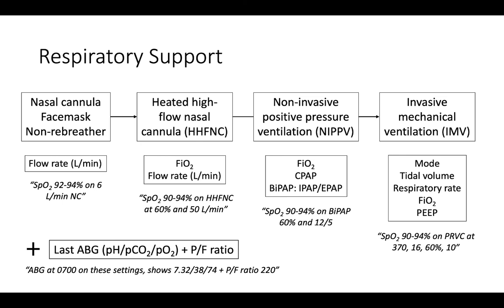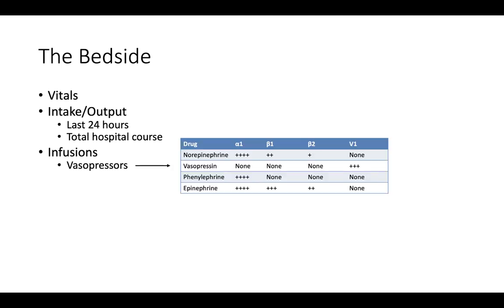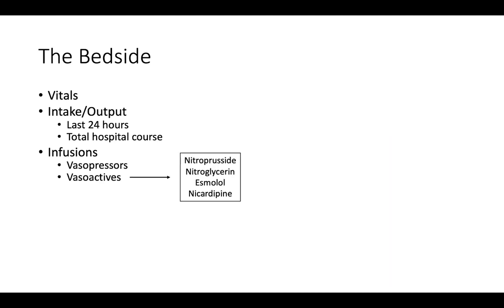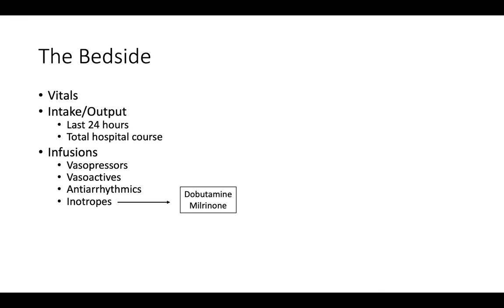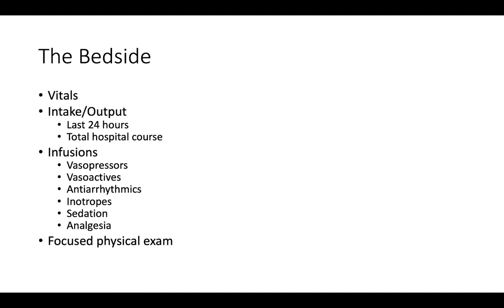When finished reporting the oxygen saturation and respiratory support, we are done with vitals and move on to the remainder of the bedside objective by reporting the intake and output. Reporting intake and output should include the net I's and O's over the last 24 hours as well as the net I's and O's for the total hospital course. After intake and output, report the current infusions if they have not already been discussed in the vitals — examples include vasopressors, other vasoactives, antiarrhythmics, inotropes, sedation, and analgesia. Finally, the bedside portion of the objective ends by reporting a focused physical exam.